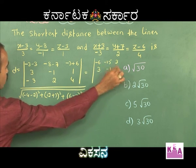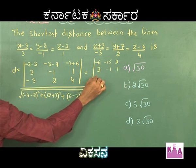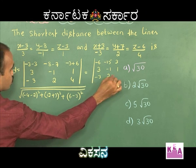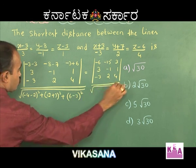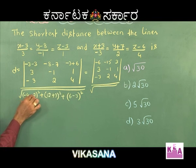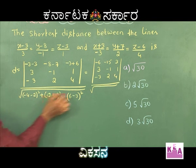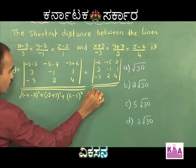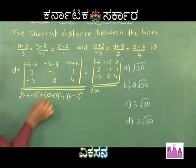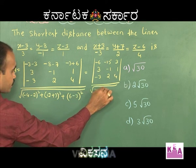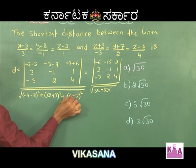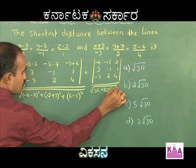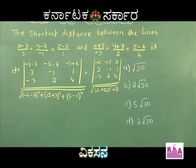The direction vectors are (3, −1, 1) and (−3, 2, 4). For the denominator: (−4−2)² = (−6)² = 36; (12+3)² = 15² = 225; (6−3)² = 3² = 9.